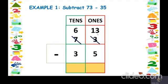Now we are going to subtract 13 and 5. We count from the smaller number to the bigger number, starting from 5: 6, 7, 8, 9, 10, 11, 12, 13. So the answer is 8. Now for the tens column, we have 6 and 3. We count from 3 to 6: 4, 5, 6 — so the answer is 3. The final answer is 38. 73 minus 35 equals 38.